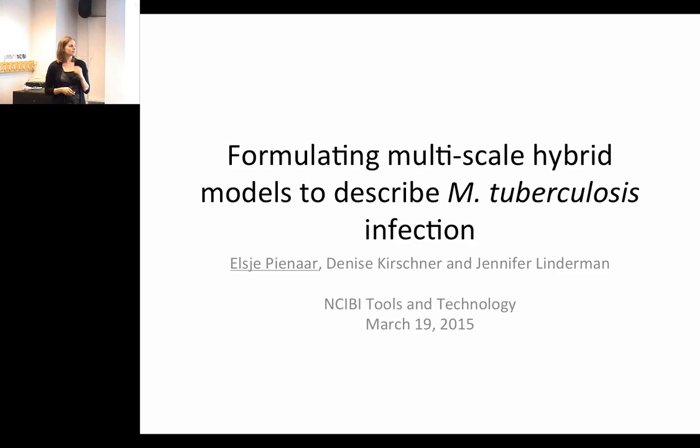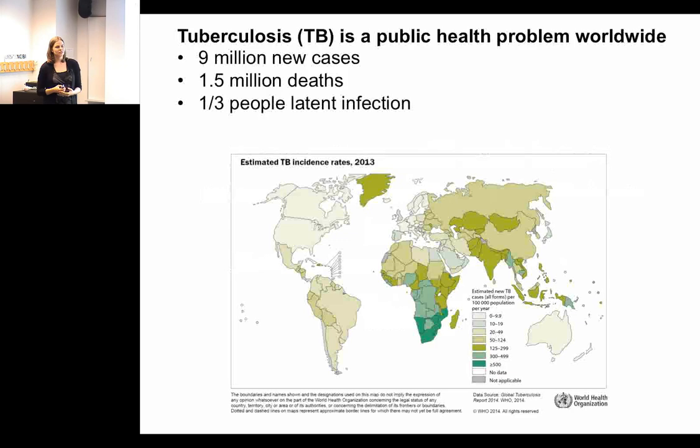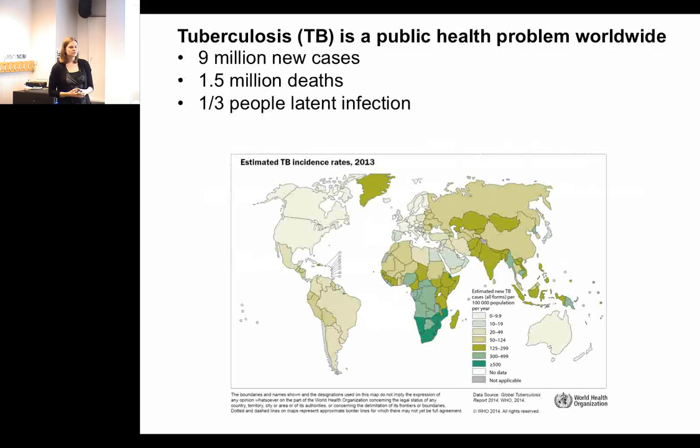Before I get into the modeling, a little background about tuberculosis. It's a global health problem — about 9 million new cases every year, about 1.5 million deaths every year. It's believed that one out of every three people is latently infected with TB, meaning you have the bacteria in your lungs but no symptoms. This WHO map of TB incidence shows it's not equally distributed, with high incidence in sub-Saharan Africa and Eastern Europe.